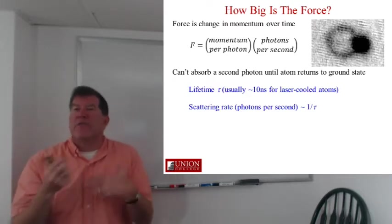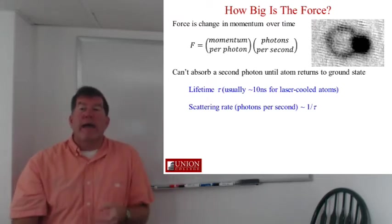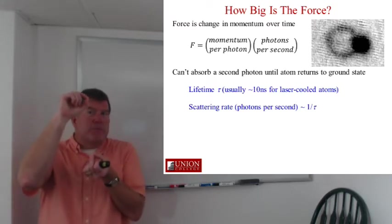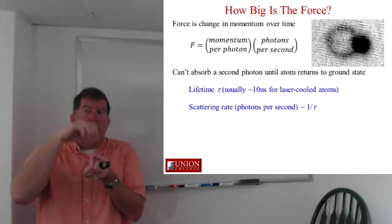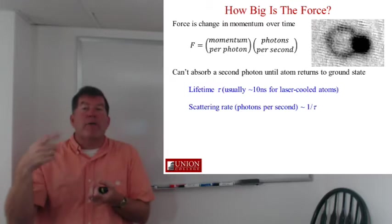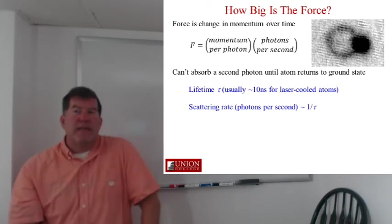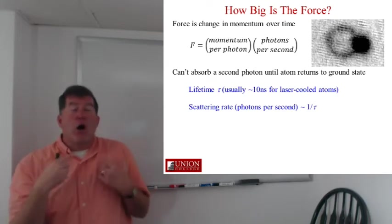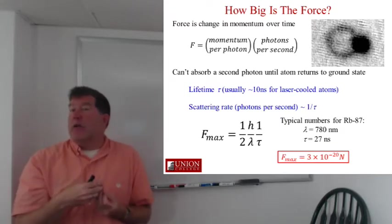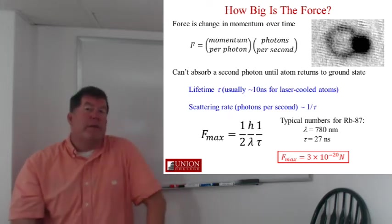Usually this is tens of nanoseconds for the sorts of atoms that we laser cool. So I can define the scattering rate as, look, I can say each time the photon goes up, it stays in that excited state. It can't absorb another photon while it's there. I have to wait a time tau for it to come back down. So the rate of scattering, the maximum number of photons per second I could possibly scatter is going to be one over that lifetime tau. So then I know what the momentum per photon is. It's h-bar times k. I know what the scattering rate is, roughly. It's one over tau.